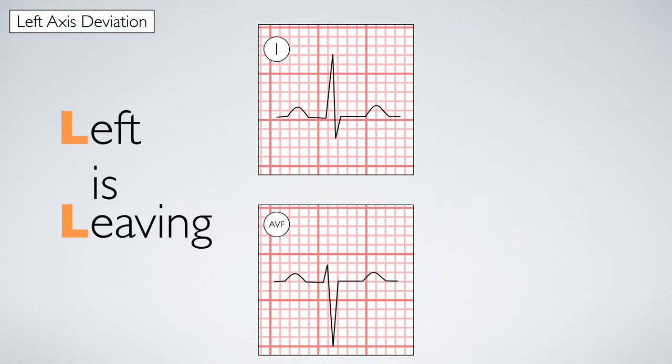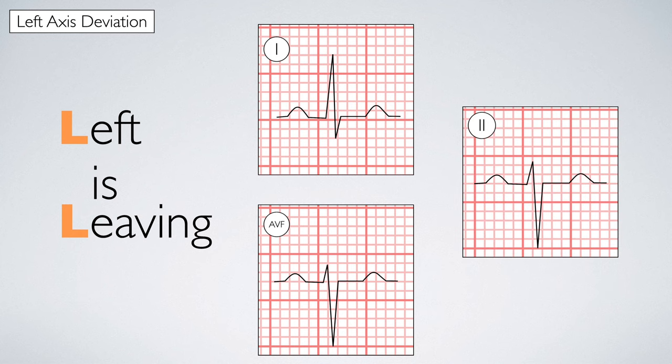Their drifting apart makes lead two become sad, giving it a negative disposition. Poor lead two.